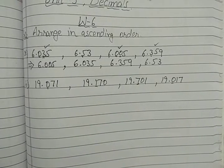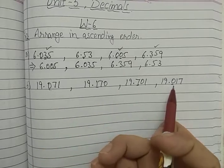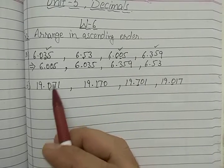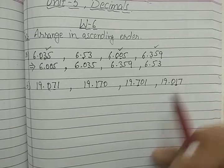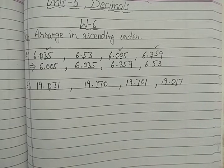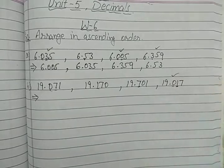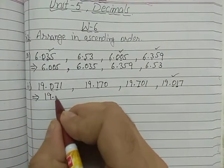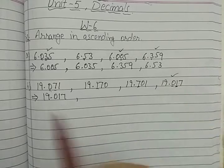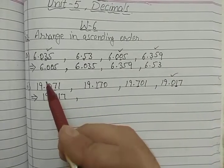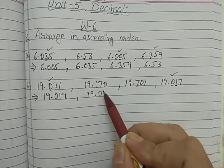We move to the tenths place: 0, 1, 7, 0. Seven is clearly greater, so the numbers with 0 at the tenths place are smaller. We have two numbers with 0 at the tenths place, so we compare their hundredths place: one has 7 and the other has 1. One is smaller than 7, so 19.017 is the smallest. The next smallest has 0 at the tenths place, so that is 19.071.